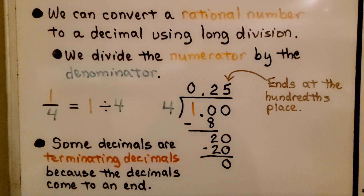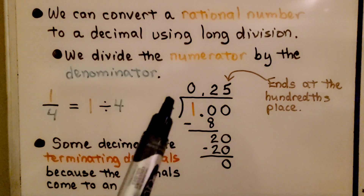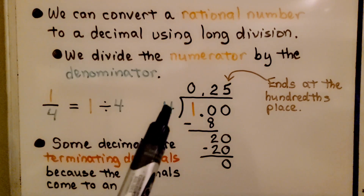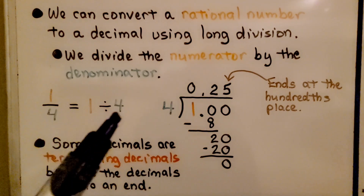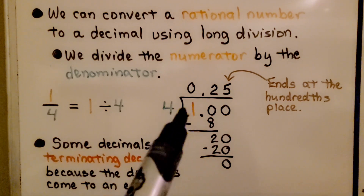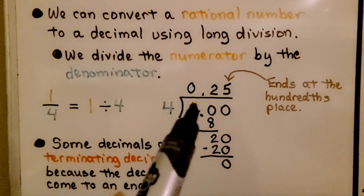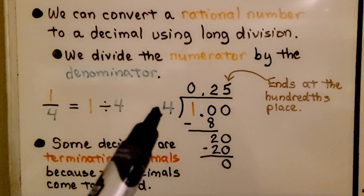We can convert a rational number to a decimal using long division. We divide the numerator by the denominator. We have 1 fourth, which is equal to 1 divided by 4. We write our 1 on the inside of the division symbol; our 4 is on the outside — that's the divisor.